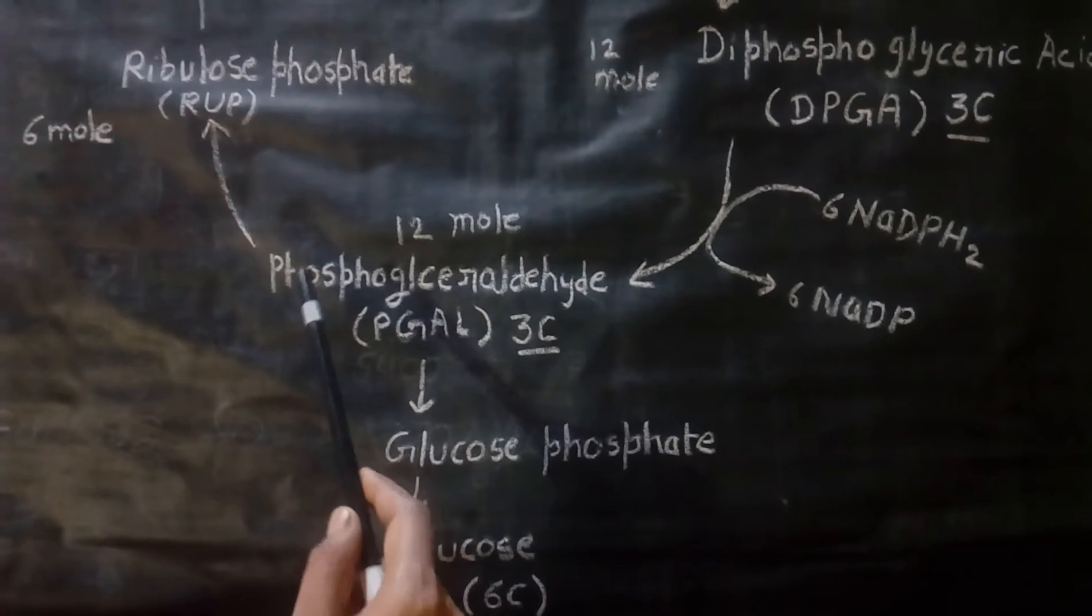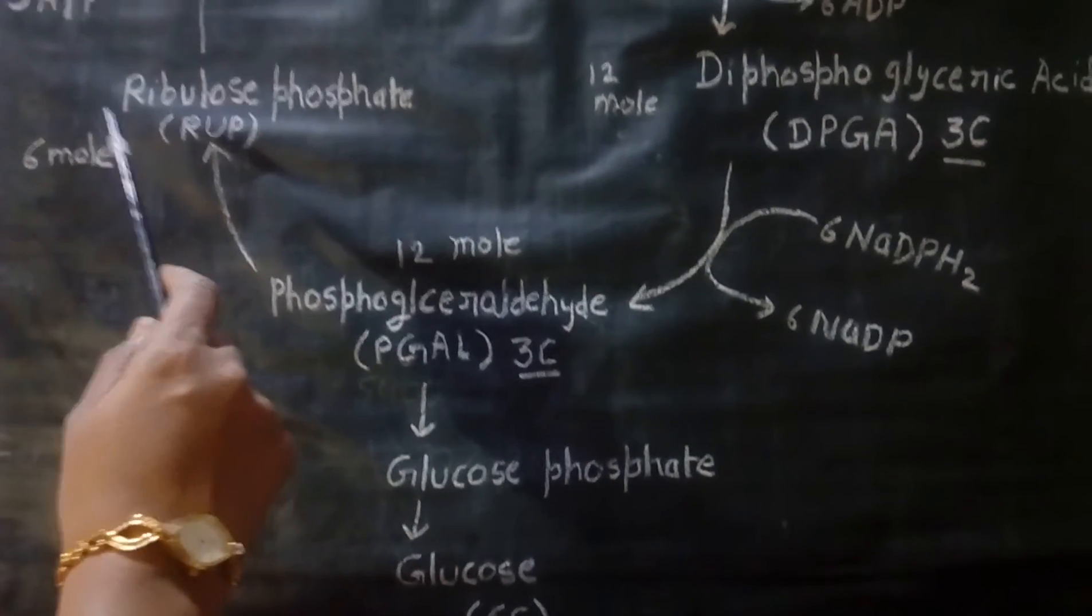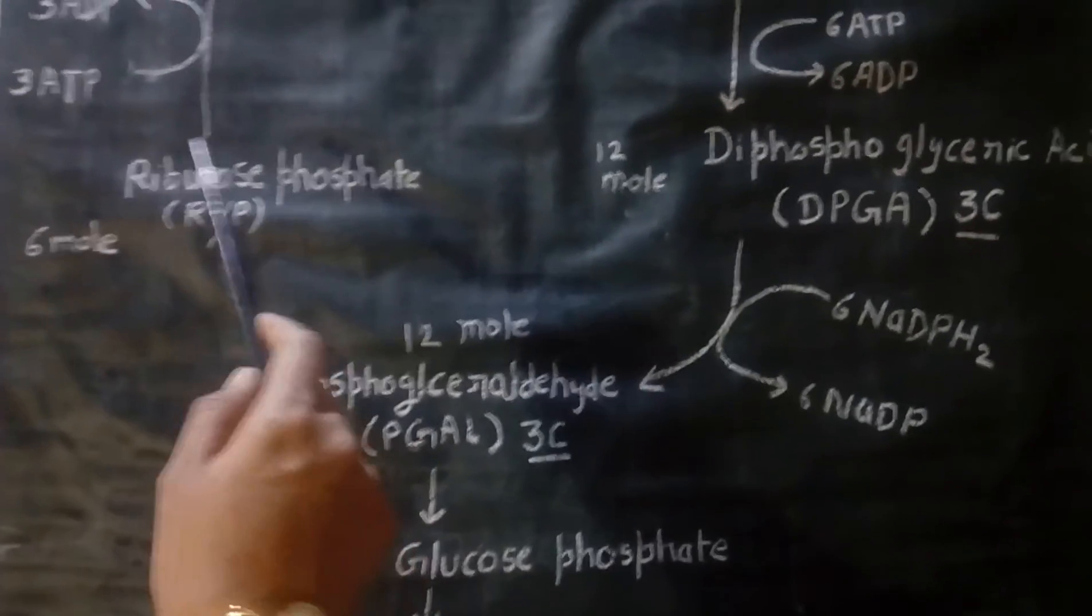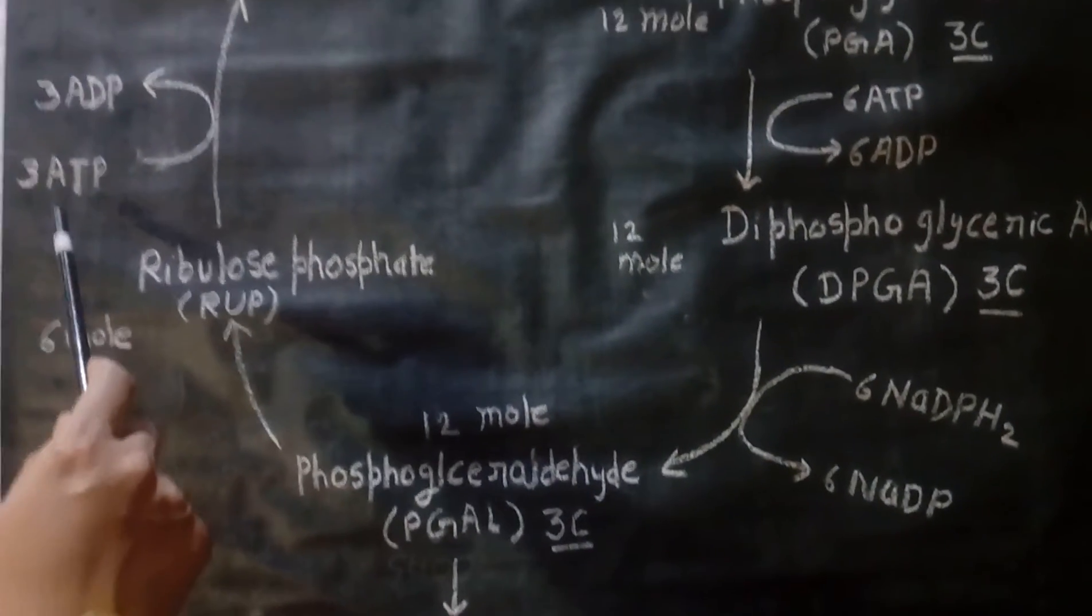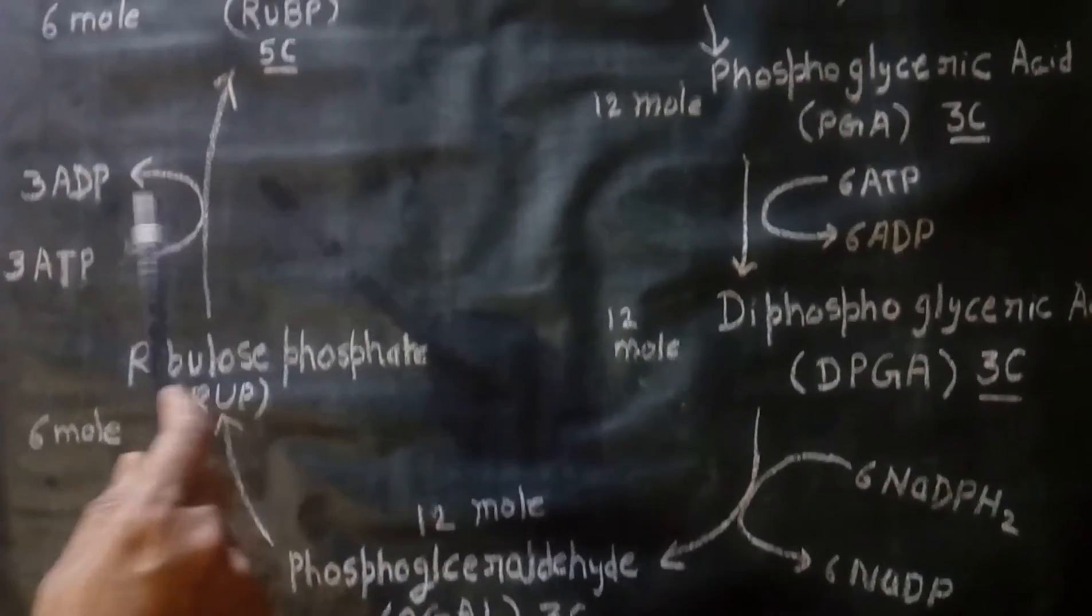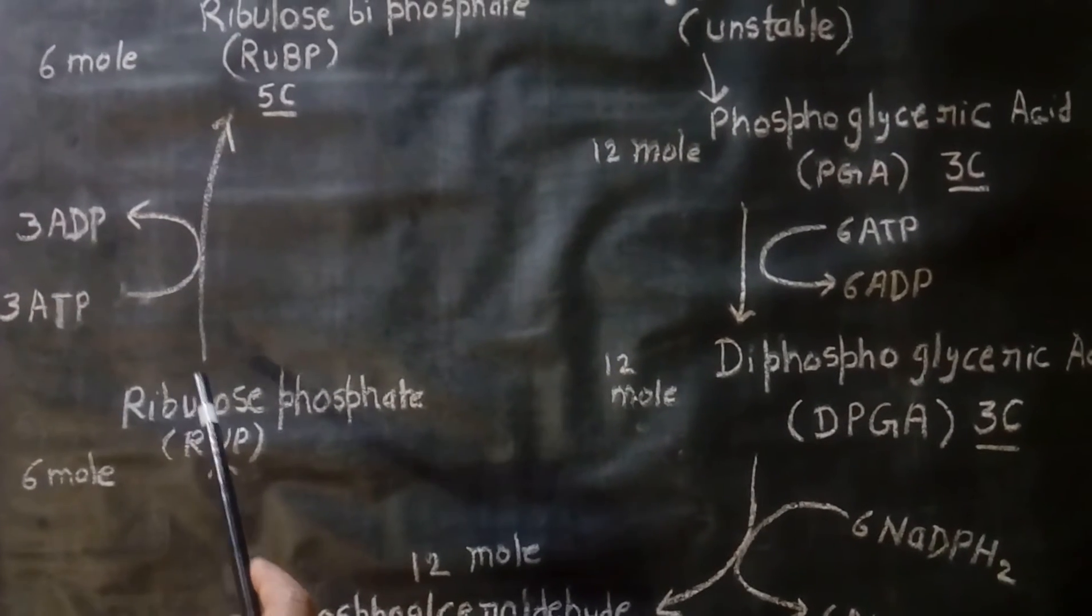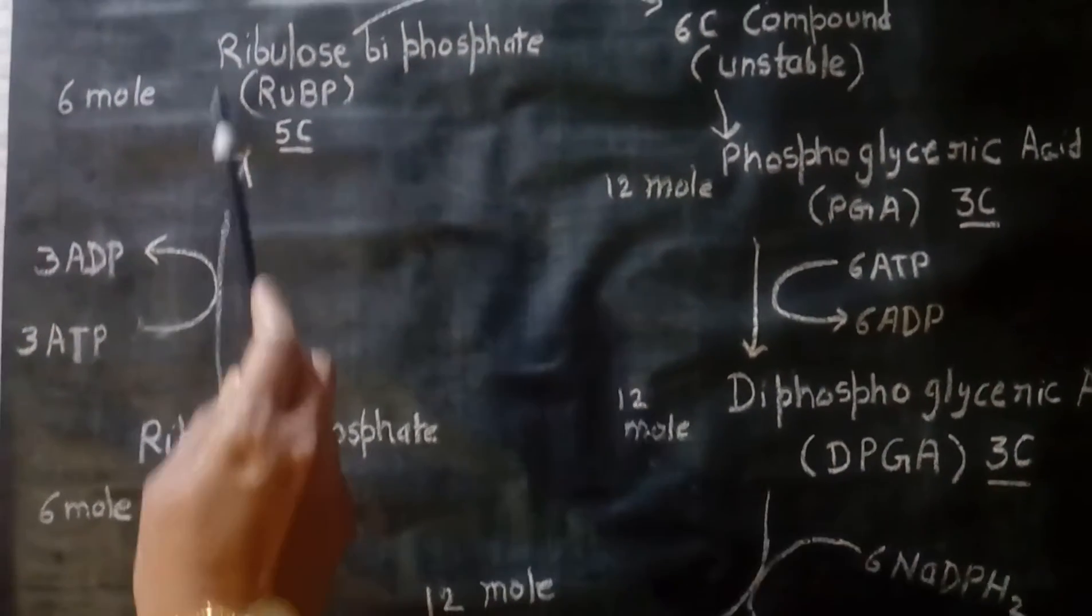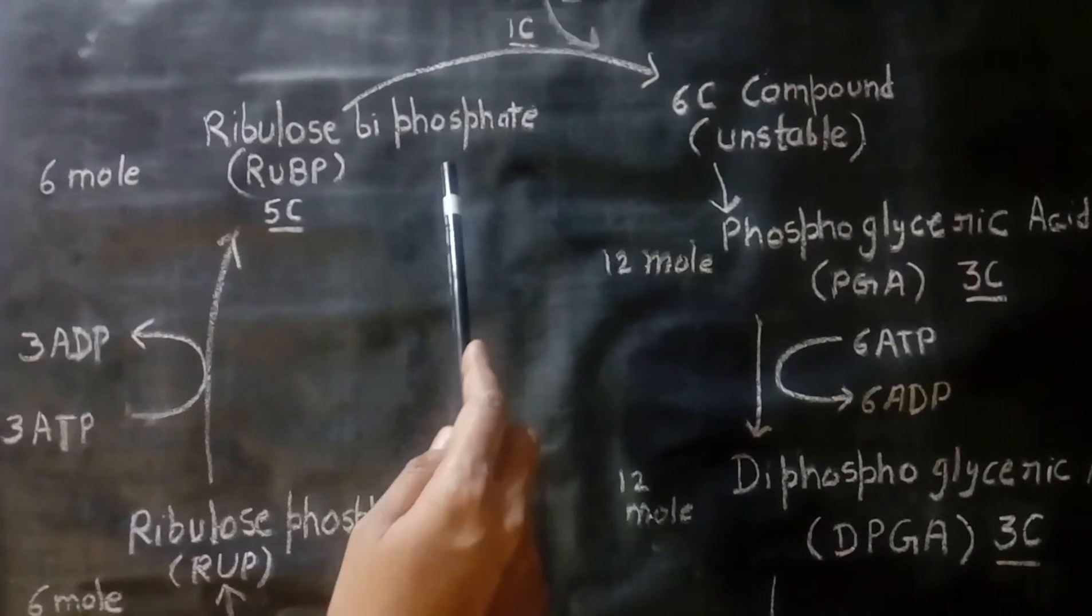And some molecules of phosphoglyceraldehyde convert to ribulose phosphate. It now takes the ATP, and ATP is changed to ADP. The phosphate bond is taken by ribulose, and it forms ribulose bisphosphate.